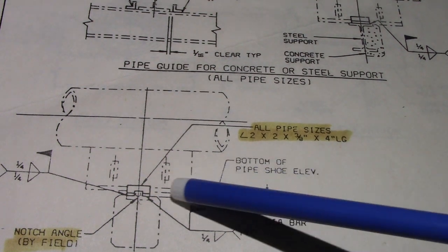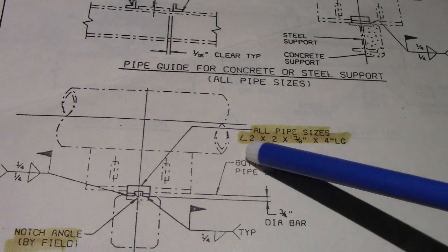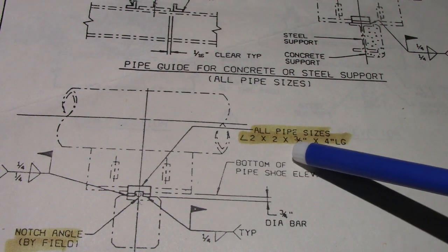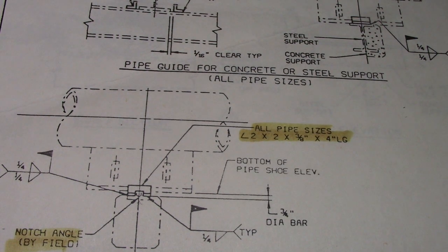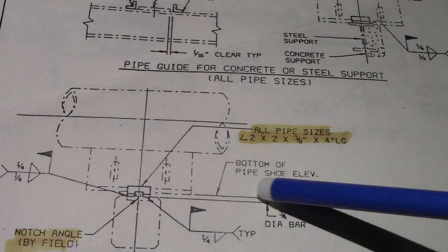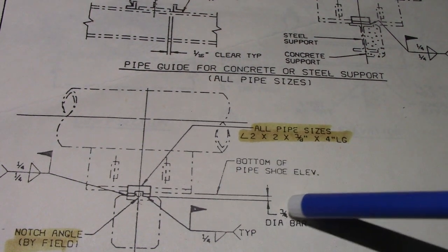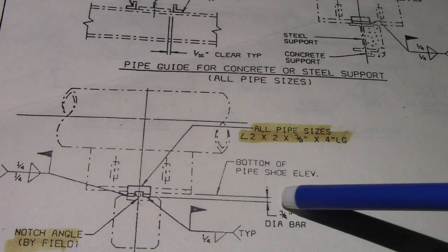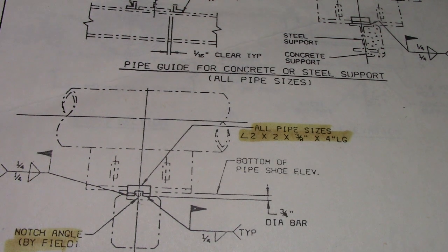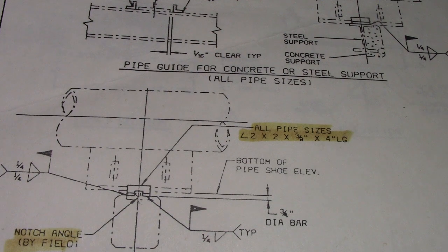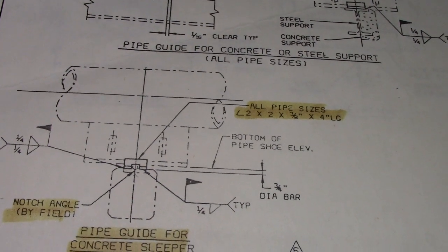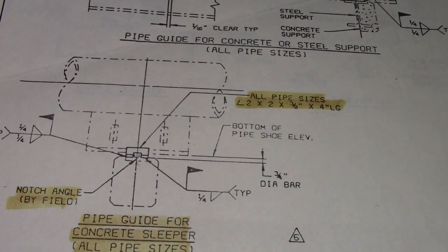They have a dimension of this guide: all pipe sizes 2 by 2 by 3/8 by 4. Bottom of pipe, elevation, diameter bar. This is pipe guide for concrete sleeper, all pipe sizes.